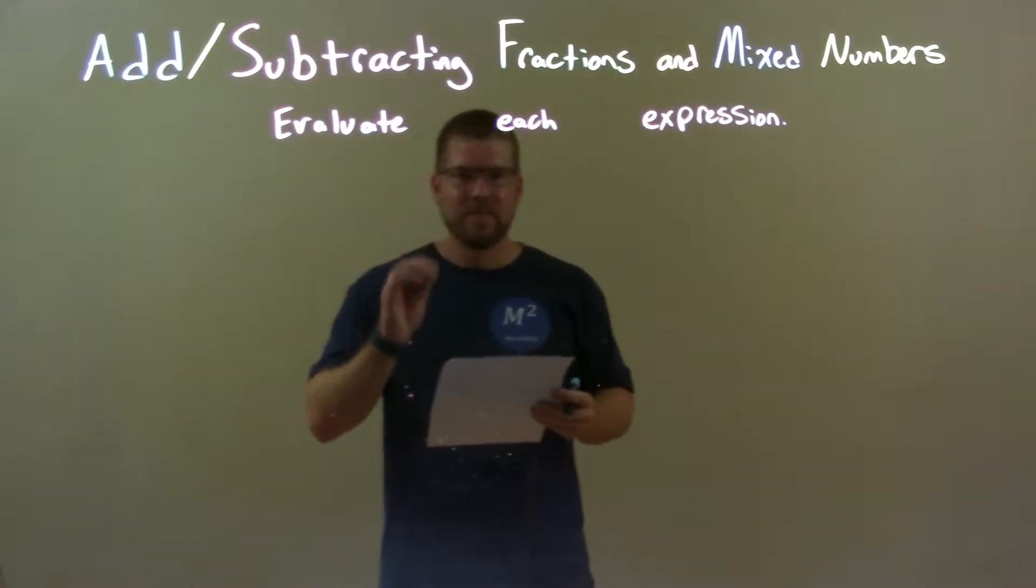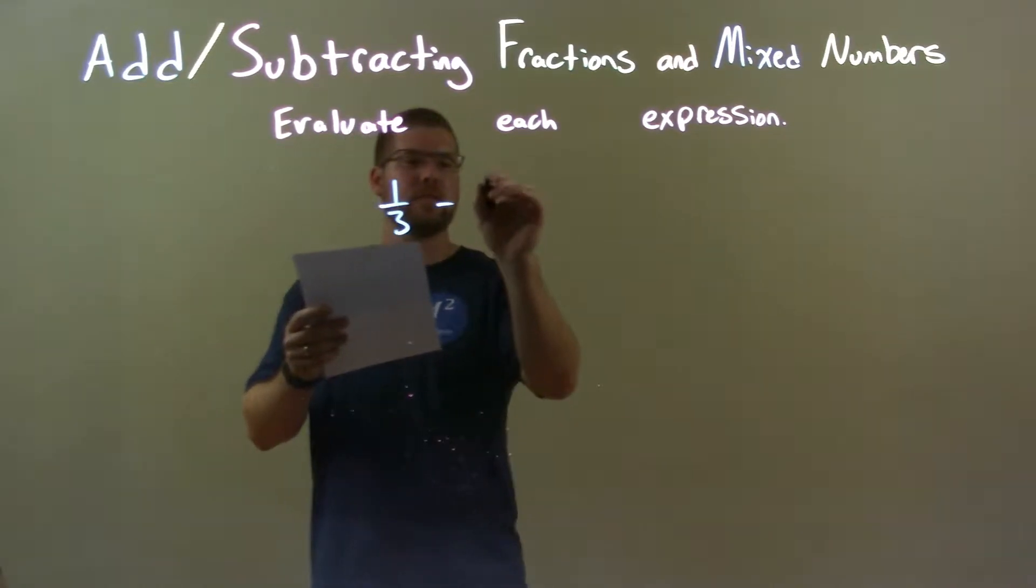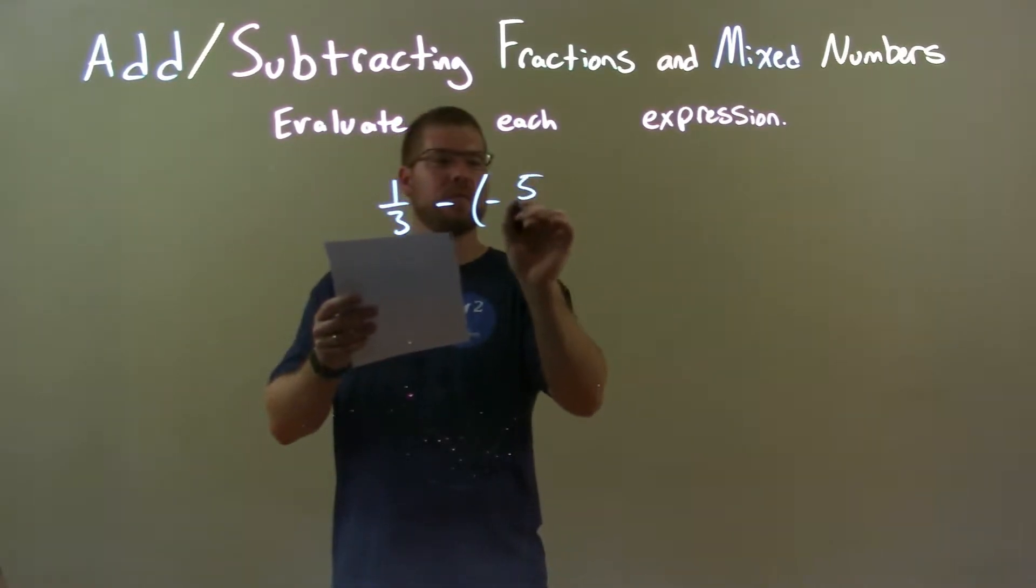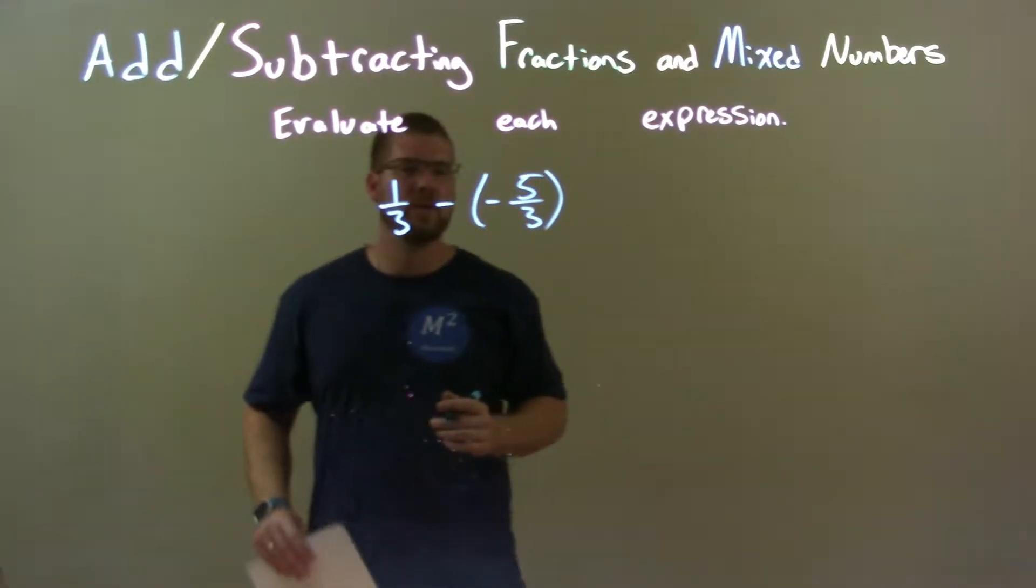So if I give you these fractions: one-third minus a negative five-thirds. So we have one-third minus a negative five-thirds.